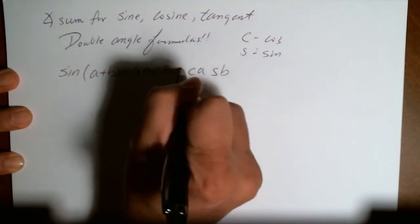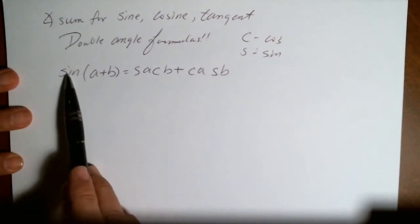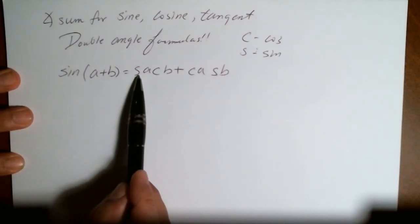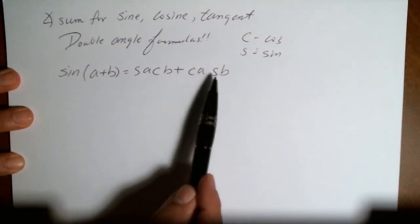A, B, A, B, keep the sign. So sine of the angle of A plus B is sine of A times cosine of B plus cosine of A times sine of B.